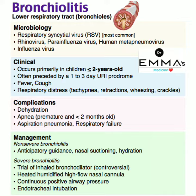To summarize the clinical features: bronchiolitis occurs in children aged 2 years or less, often preceded by a 1 to 3 day upper respiratory tract infection prodrome, then developing fever, cough, and respiratory distress — tachypnea, retraction, wheezing, and crackles.